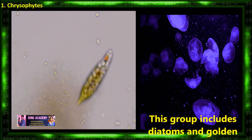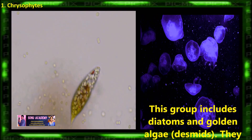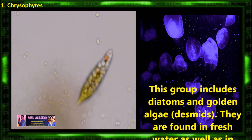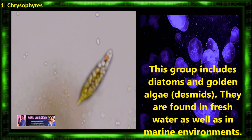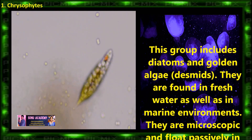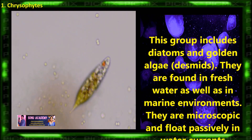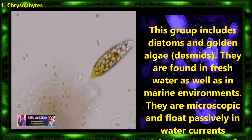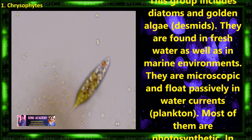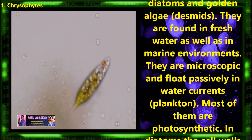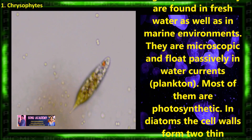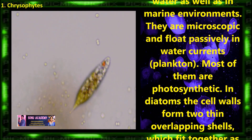First, let us discuss about chrysophytes. This group includes diatoms and golden algae. They are found in fresh water as well as in marine environments. They are microscopic and float passively in water currents. Most of them are photosynthetic.